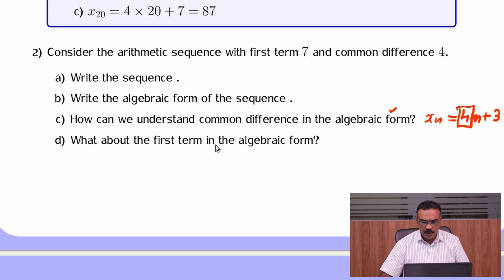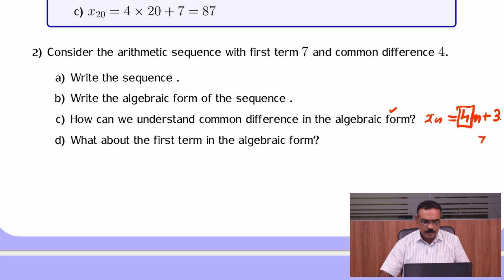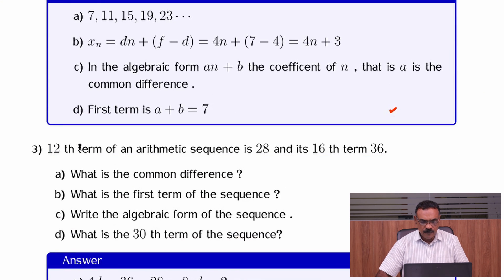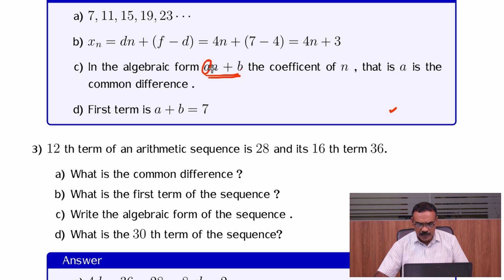What about the first term? The first term is found when n equals 1: 4 into 1 plus 3, that is 7. Simply adding 4 and 3 gives us the first term. In general, if an plus b is the algebraic form, then a is the common difference and a plus b is the first term.